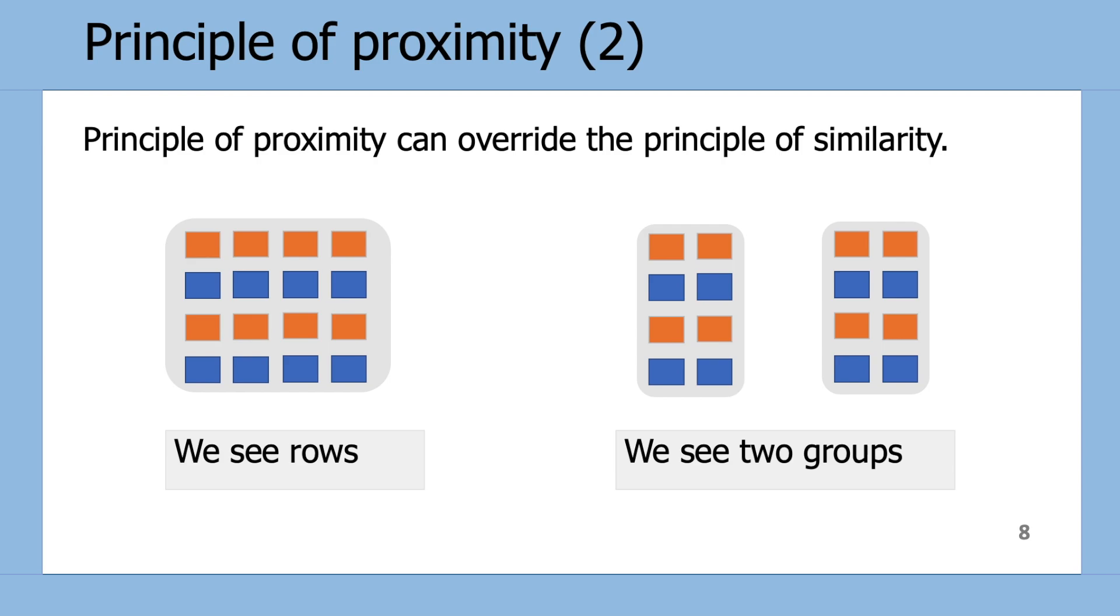When designing visuals it's important to know that the Principle of Proximity overrides the Principle of Similarity, which was the first principle we covered. In the left-hand example, the Principle of Similarity displays the different color groupings as rows, but on the right-hand side those rows are no longer as apparent due to the large gap in space in between the two boxes causing them to be perceived as two different groups, which demonstrates how the Principle of Proximity can override the Principle of Similarity.